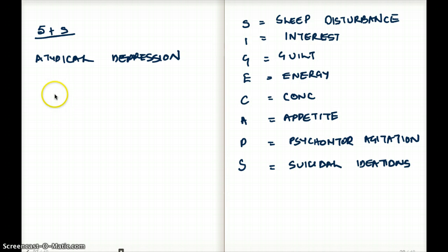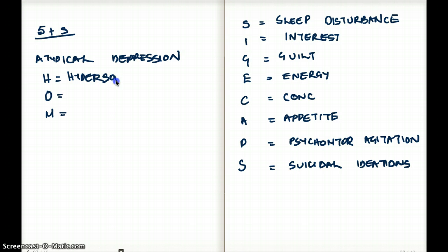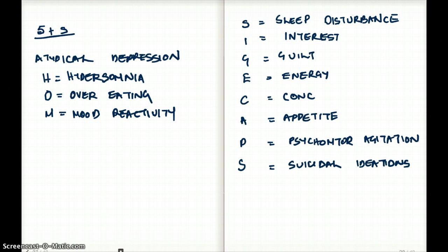The way I remember atypical depression is using this mnemonic: H-O-M, home. H stands for hypersomnia. Hypersomnia is too much sleepiness. O is for overeating. And M is for mood reactivity.